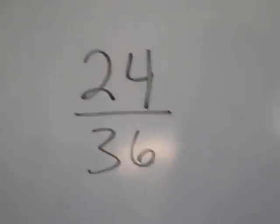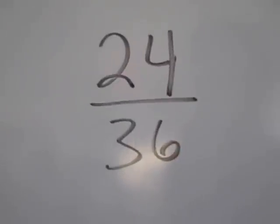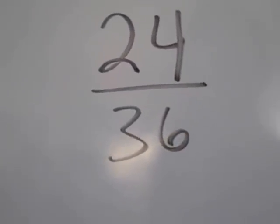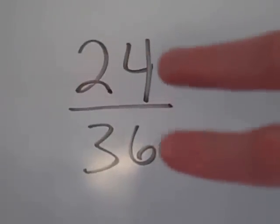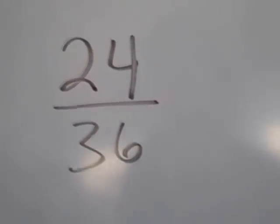You look at a fraction like 24/36 and you need to reduce it to simplest form. Simplest form is when you can't divide both the numerator and the denominator by any common factors.